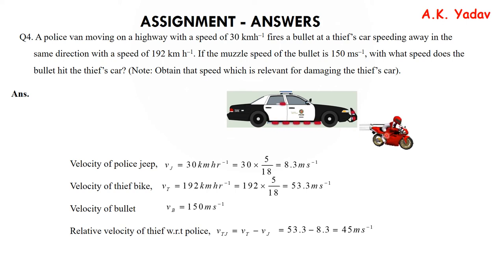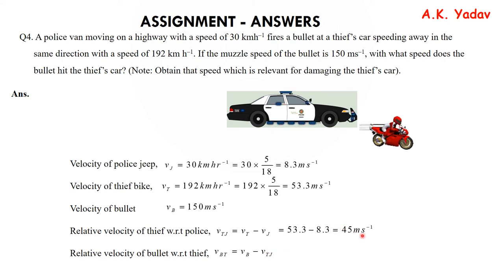The thief is moving at 45 m/s relative to the police car. To find the relative velocity of the bullet with respect to the thief: VBT = VB − VTJ = 150 − 45 = 105 m/s.